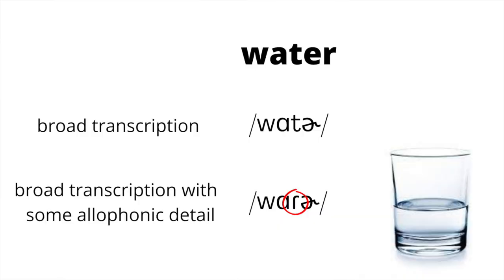In some cases, though, phoneticians like to highlight an allophone, where instead of transcribing it as the category, they like to indicate that in this case it was this specific one. And that's true of the alveolar tap. The alveolar tap is an allophone of actually two different phonemes, and actually more if we look at other languages.